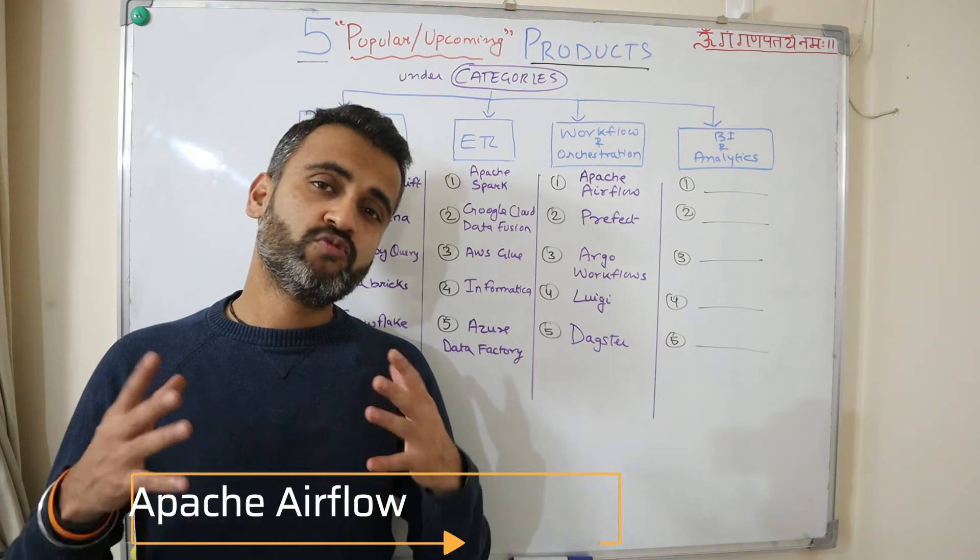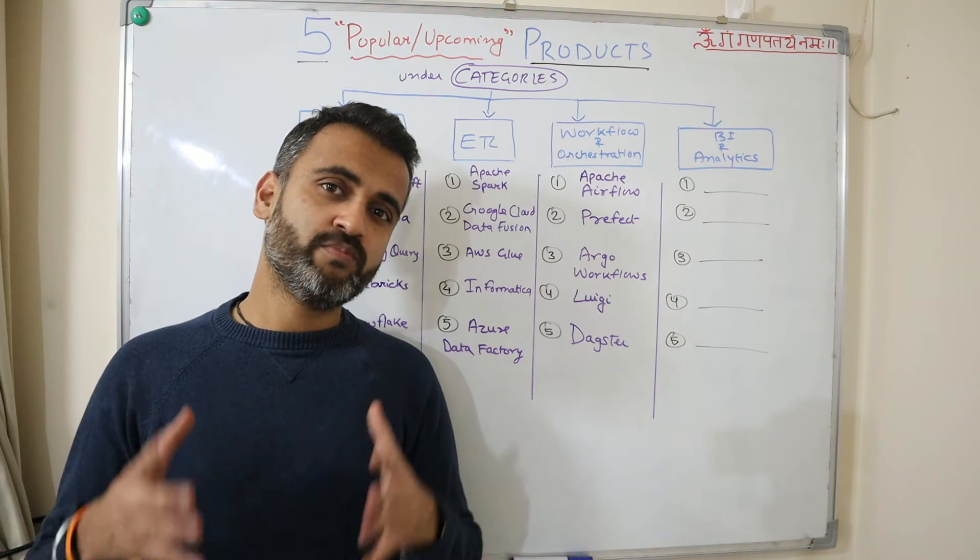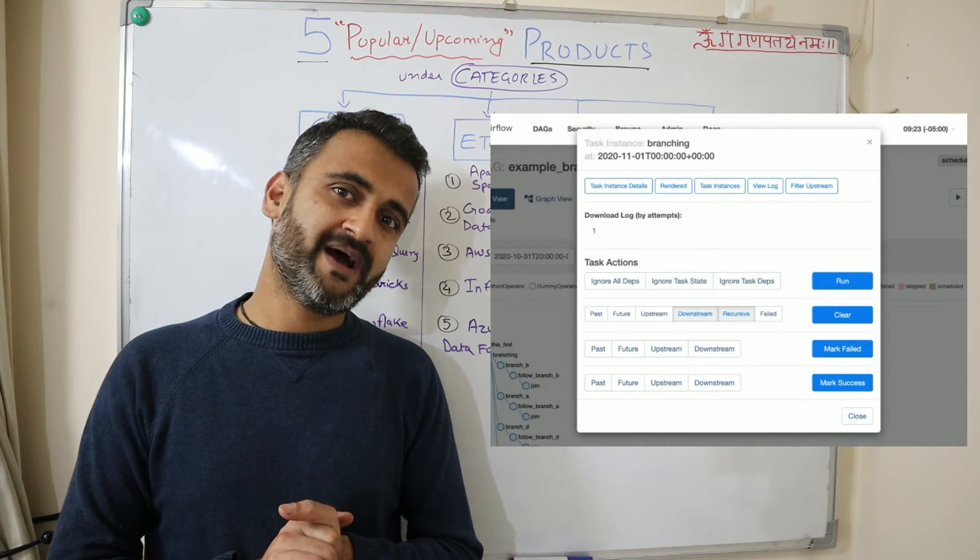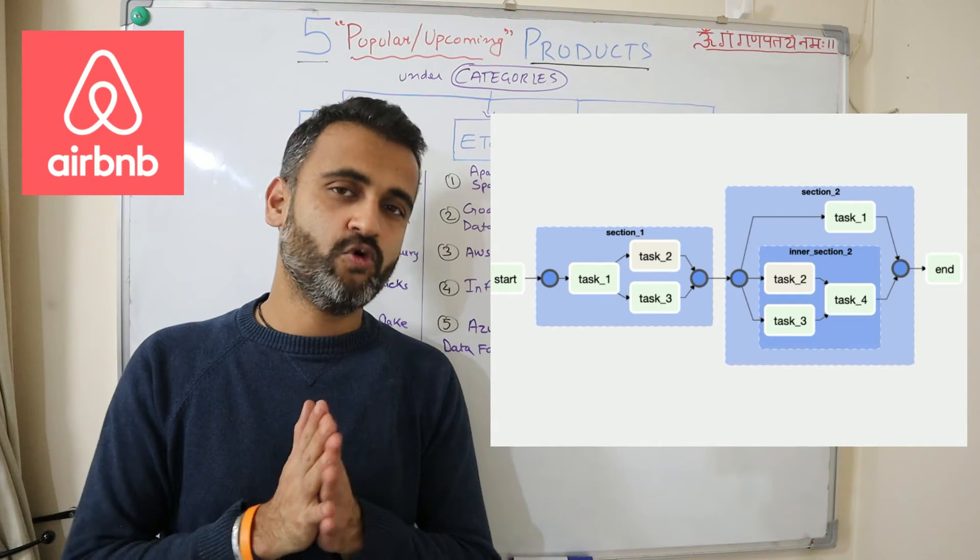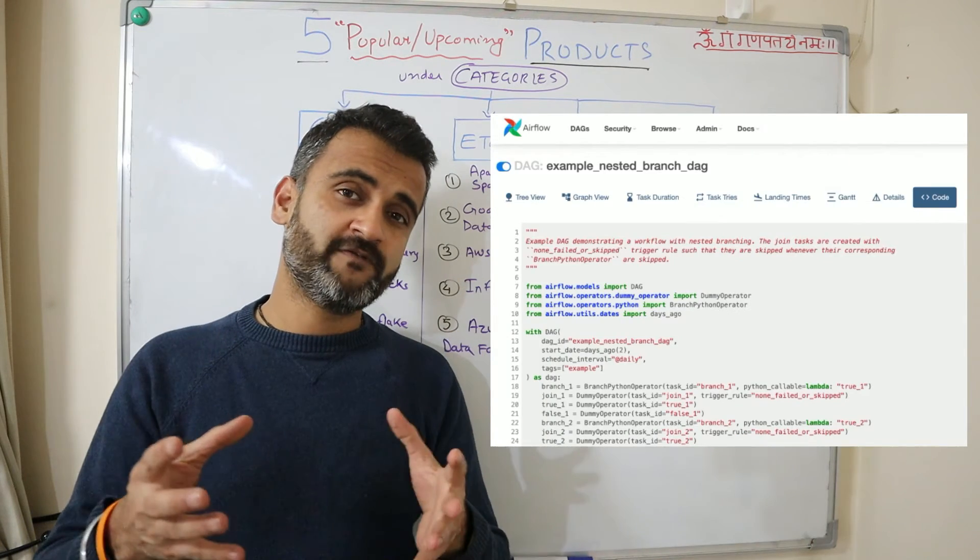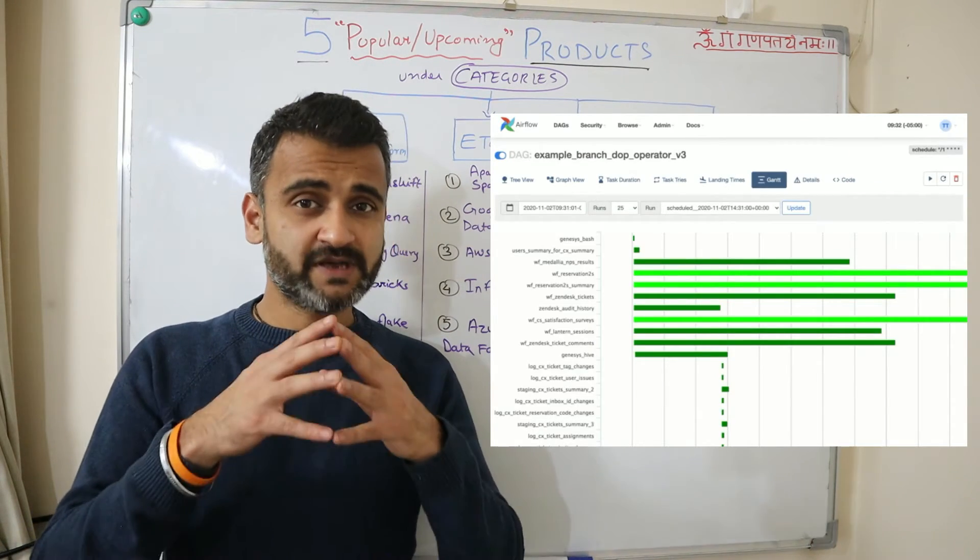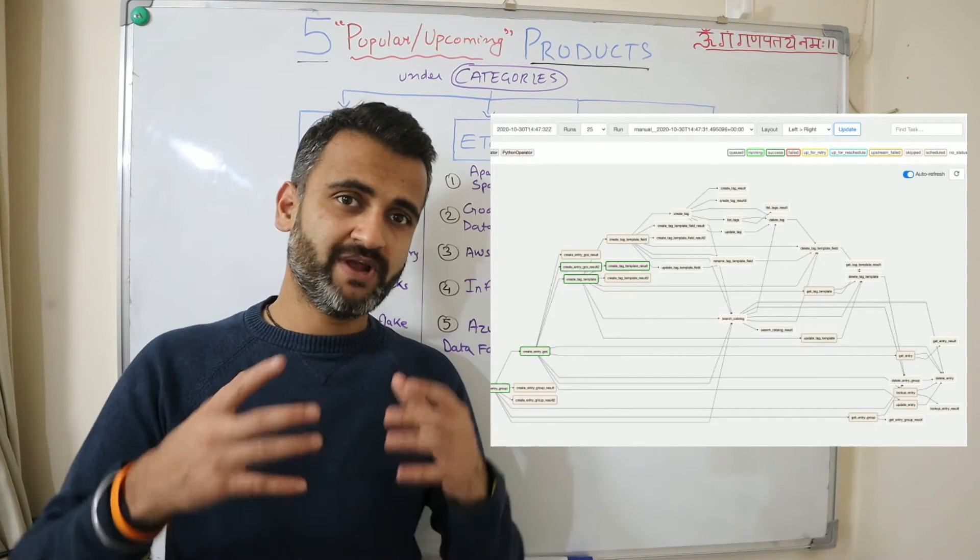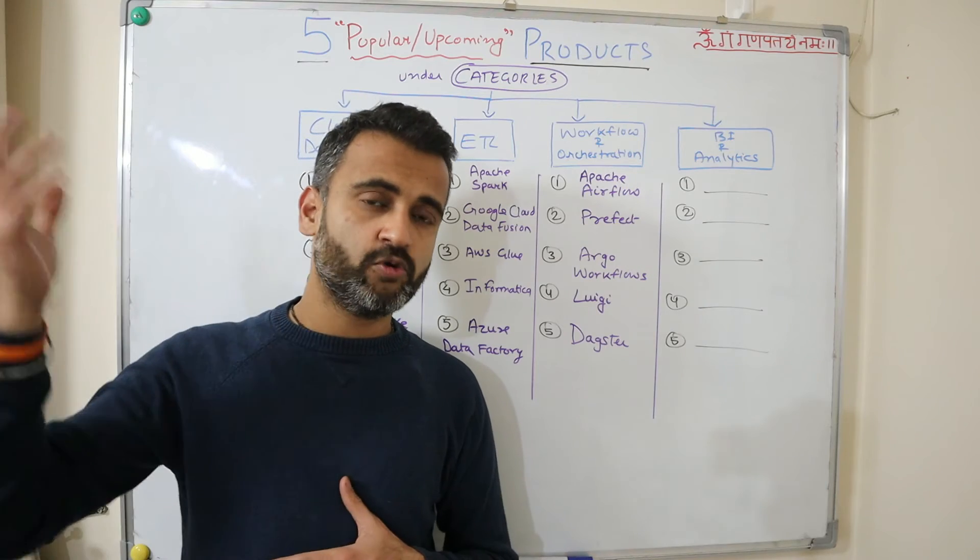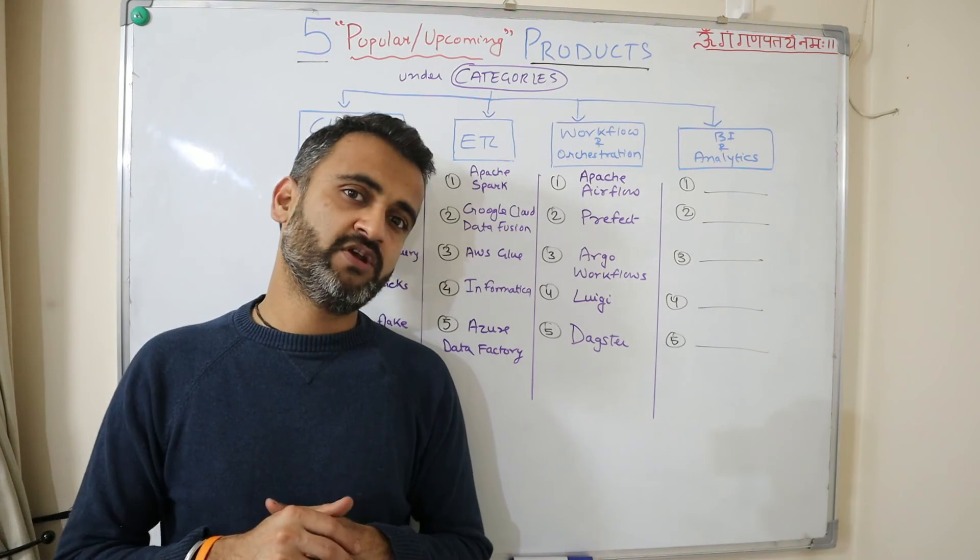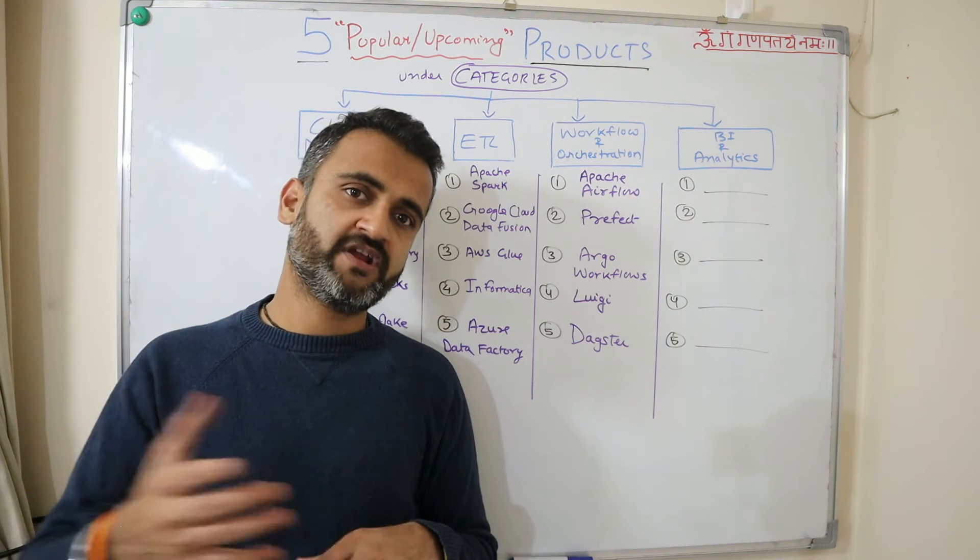Apache Airflow is one of the most famous open source workflow management products and it was created or developed by Airbnb and then it was made open source. It has a massive community and it also offers you a UI, but it is completely based on Python. Once you have developed your data pipeline you can create your DAGs using Python and then deploy it.